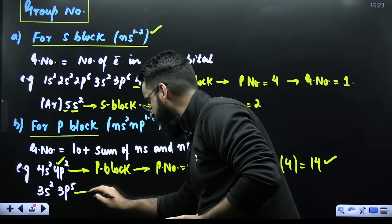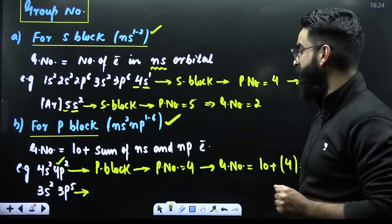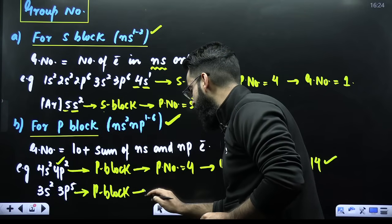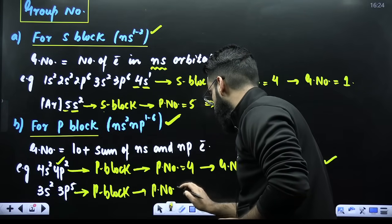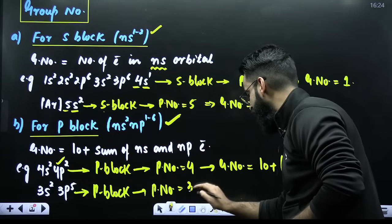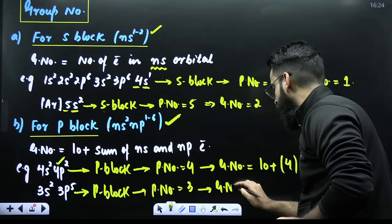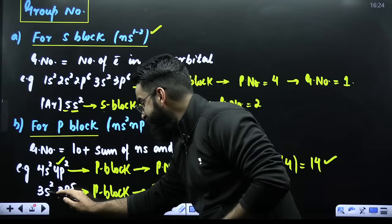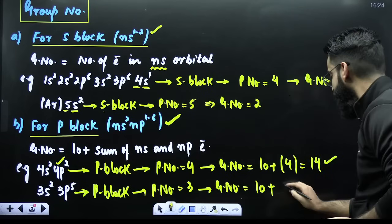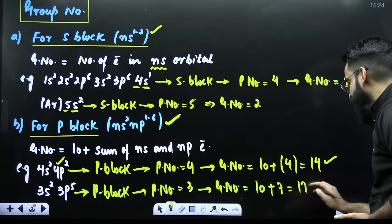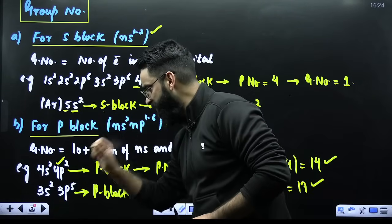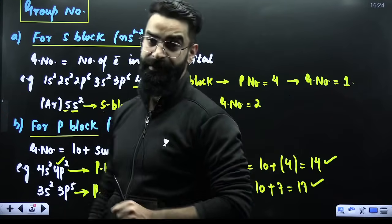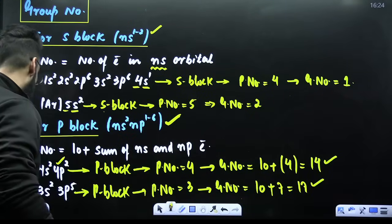Similarly, for another P block element where the last electron has entered the P subshell: the highest principal quantum number is 3, so period number is 3. Group number = 10 + sum of NS and NP electrons = 10 + (2 + 5) = 10 + 7 = 17. So this element belongs to the 17th group.